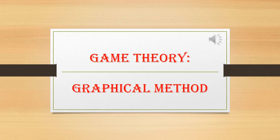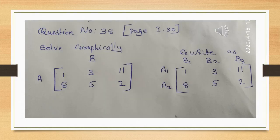We are going to talk about 2×n matrices. We have to use the graphical method when there are more than 2 columns or more than 2 rows — that is, when it is not a 2×2 matrix. We are going to discuss the graphical method with principles of dominance included in all cases.